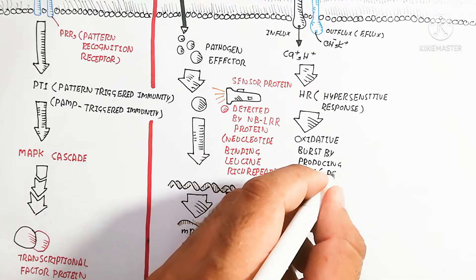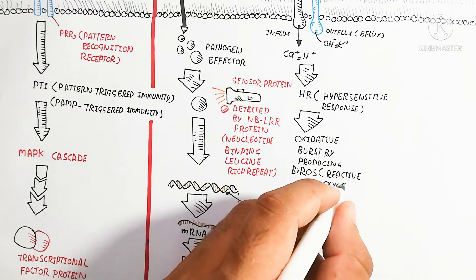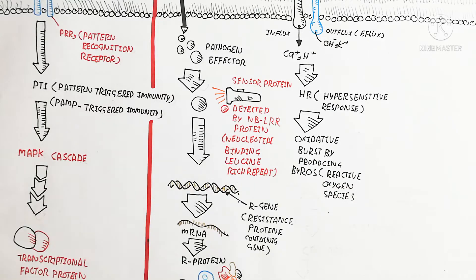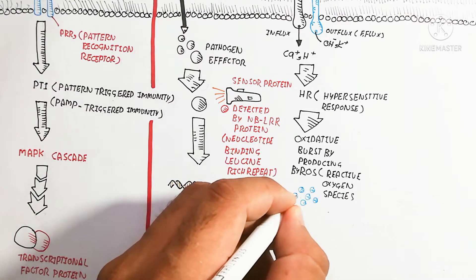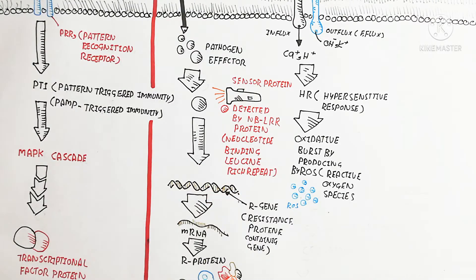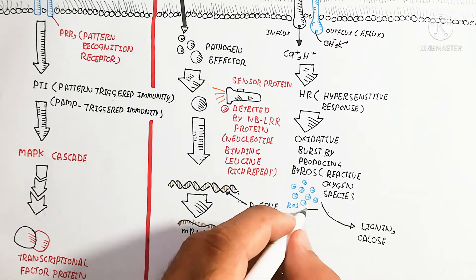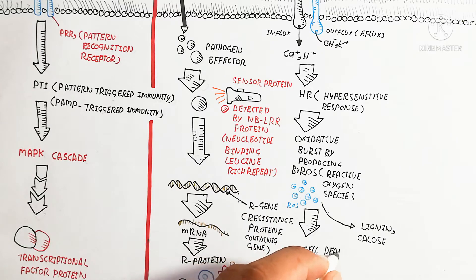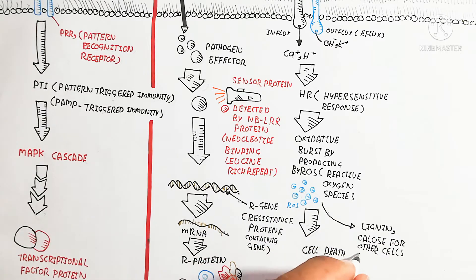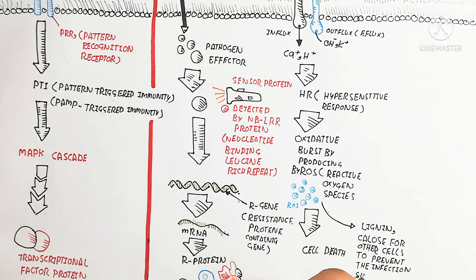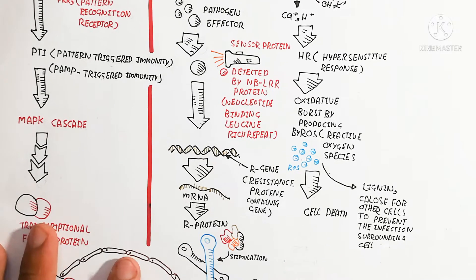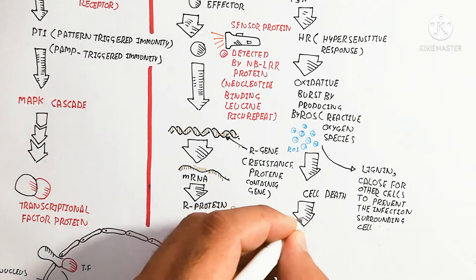The hypersensitive response causes an oxidative burst by producing reactive oxygen species (ROS). The ROS causes cell death — this is the ETI effector-triggered immunity response. In ETI, the result is cell death, while in PTI (pattern-triggered immunity), there is no cell death; instead, antimicrobial proteins are formed.